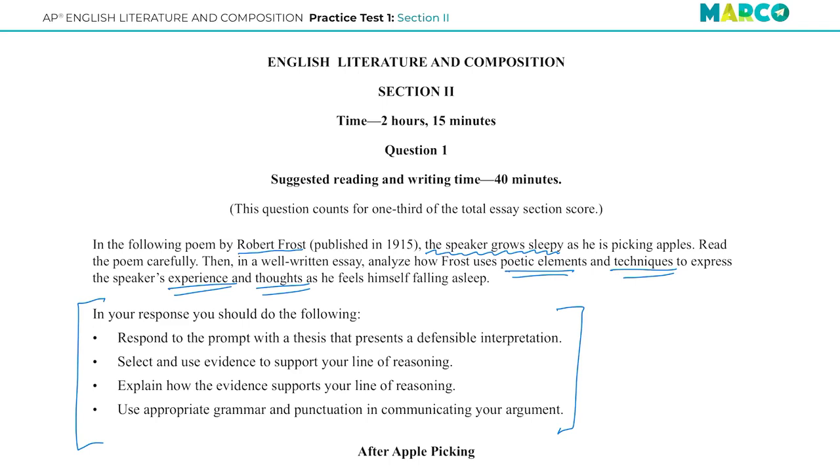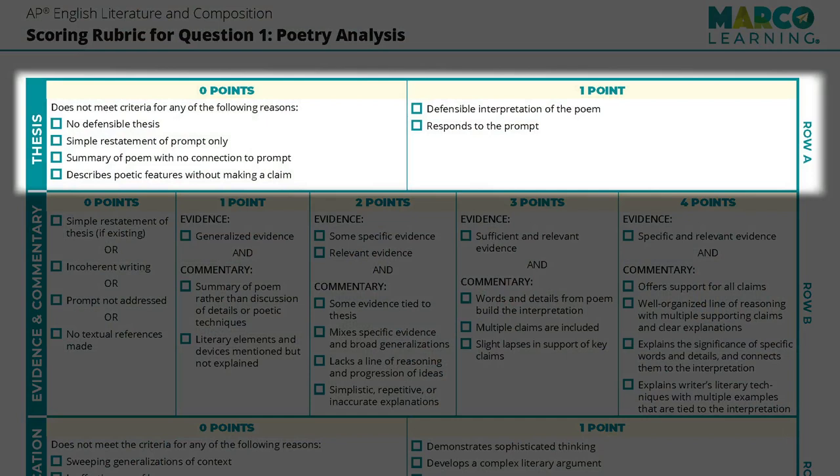A defensible interpretation means one that a reasonable reader could make. I can't make the interpretation that he's not falling asleep and not picking apples — maybe I can, but the prompt says he does, so I probably should believe them. I need to make sure I have a thesis that presents a defensible interpretation. I can earn up to one point for this part of the essay.